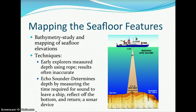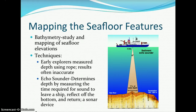Early explorers measured depth using rope, and the results were often inaccurate because they would lower a weighted rope down until it reached the bottom of the floor, then measure the length of rope to get their sea floor elevations. Eventually, due to advances in science and technology, scientists developed the echo sounder, which determines depth by measuring the time required for a sound to leave a ship, reflect off the bottom, and return to a sonar device on the ship.